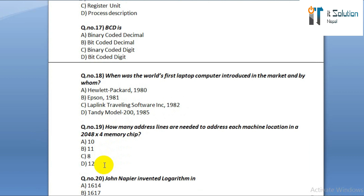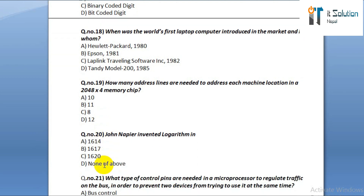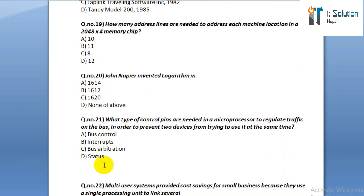Question number nineteen: how many address lines are needed to address each machine location in a 2048 × 4 memory chip? Option A: 10. Option B: 11. Option C: 8. Option D: 12. Question number twenty: John Napier invented logarithm in option A: 1614. Option B: 1617. Option C: 1620. Option D: none of the above.